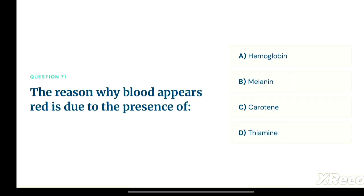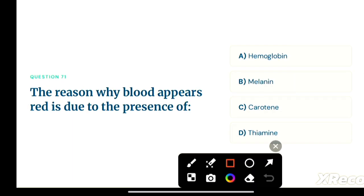Next question: the reason why blood appears red is due to the presence of — option A: hemoglobin, option B: melanin, option C: carotin, option D: thiamine. The correct answer is option A, hemoglobin. The presence of hemoglobin is responsible for the red color of blood.